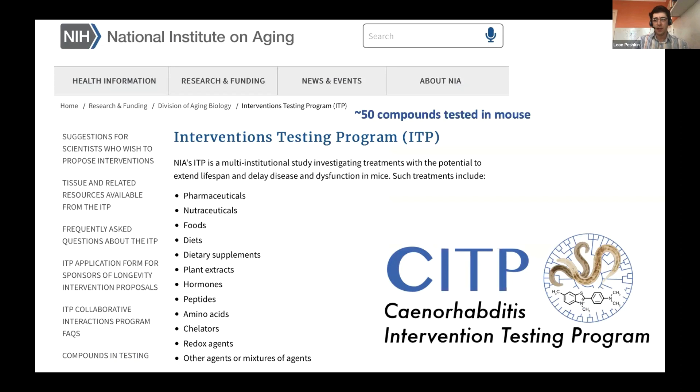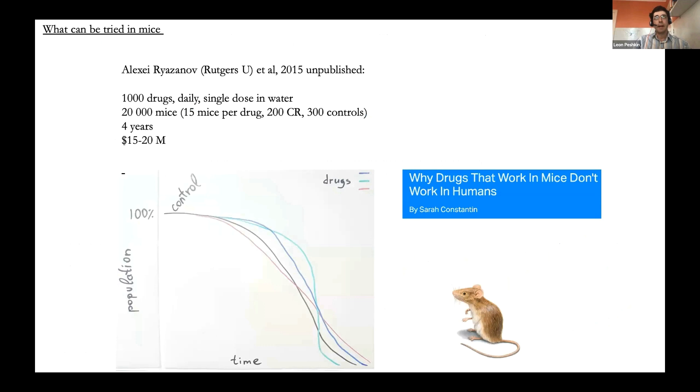Rapamycin is maybe the only compound that in both male and female mice affords some life extension. There is also a new program set up to test interventions in nematodes, which I think is good to have for some reasons. Yet what we can learn in nematodes is very approximately transferable to humans for many reasons, which I will actually mention below.